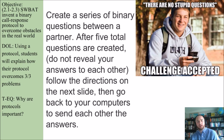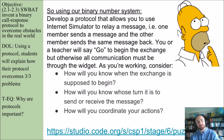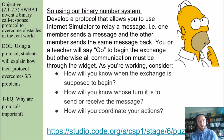Create a series of binary questions with a partner. After five total questions are created, don't reveal your answers to each other. Follow the directions on the next slide, then go back to your computers and send each other the answers for each of those five questions. You're using a binary number system now — you're going to use the Internet Simulator widget, and instead of A's and B's, it's going to be 1s and 0s. After you and your partner have your five questions, develop a protocol that allows you to use the simulator to relay a message — an answer to each of those questions. One member sends a message, and the other member sends the same message back to confirm that you received it.